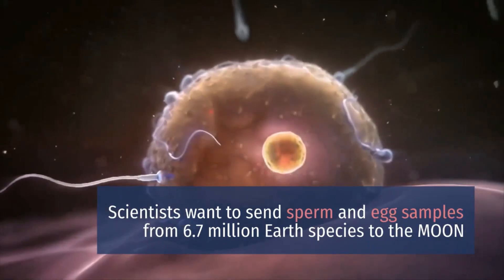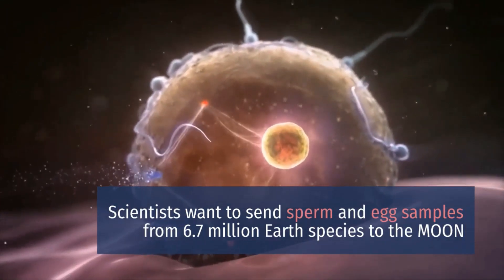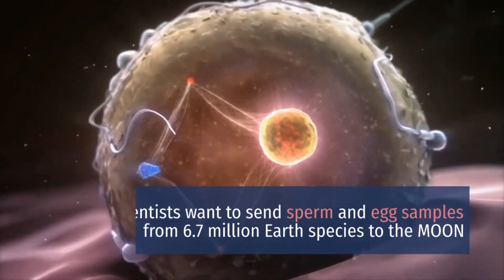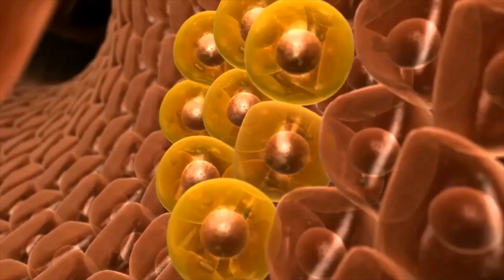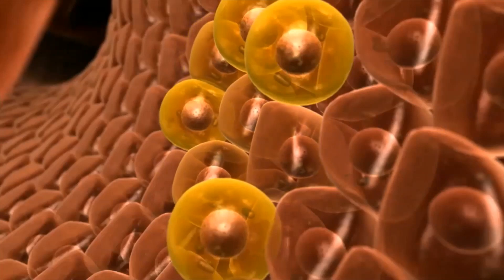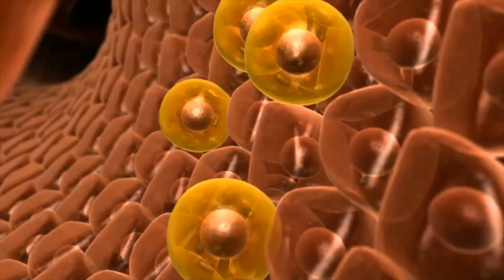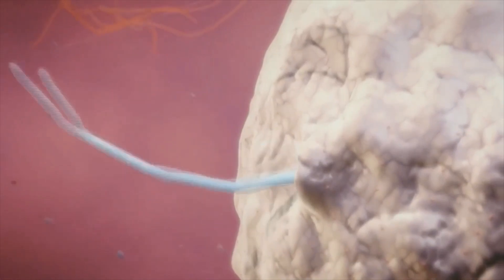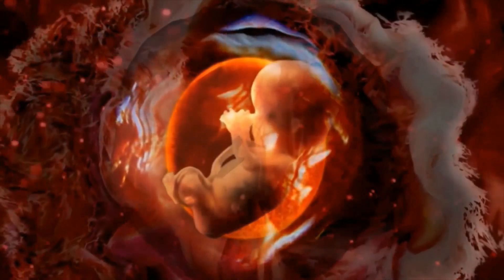Scientists want to send sperm and egg samples from 6.7 million Earth species to the moon. Sperm and egg samples from 6.7 million of Earth's species should be sent to an ark built on the moon as a modern global insurance policy.